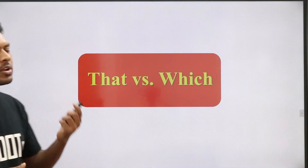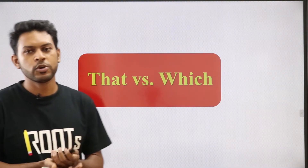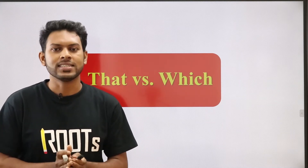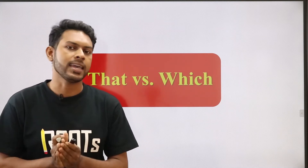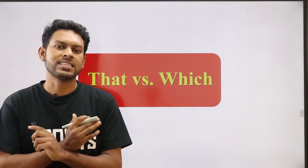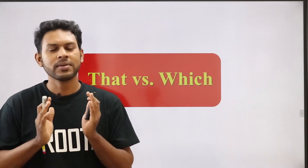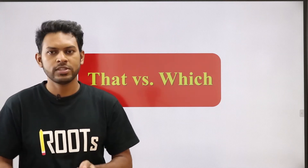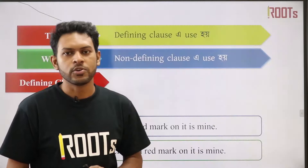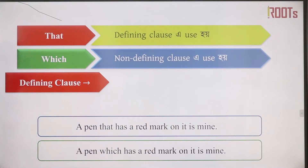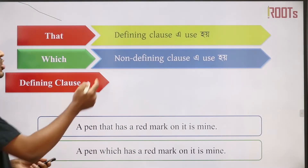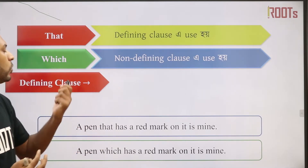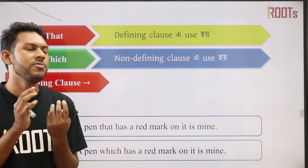In this topic, we have a lot of basic confusion. We have a lot of questions. In the IBA, there is a question about 'that' and 'which.' So, let's start. First thing first: when is 'that' used? 'That' is used when there is a defining clause. And 'which' is used when there is a non-defining clause.